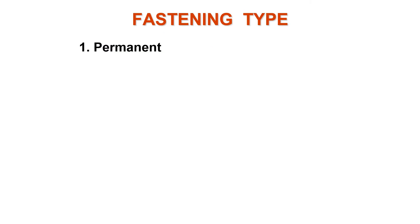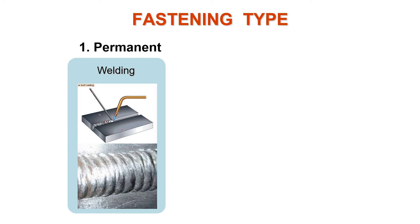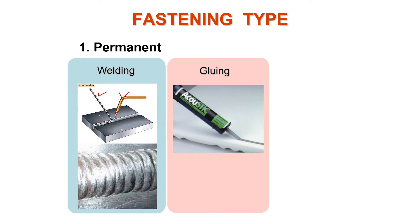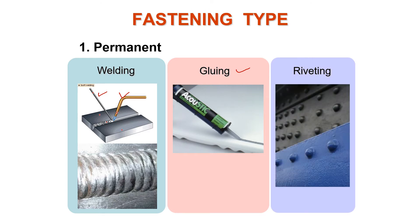In permanent fastening, welding joins two parts by melting a welding rod between them using electrical heat or oxy-acetylene gas. Gluing applies a chemical to join two parts together. Riveting uses cylindrical features with a head — rivets are permanent joints used to fasten two or more components together.